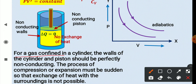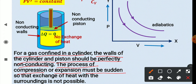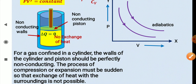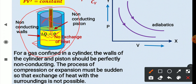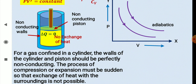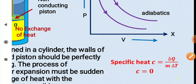For a gas confined in a cylinder undergoing an adiabatic process, the walls and piston must be perfectly non-conducting. The process of compression or expansion must be sudden so that exchange of heat with the surroundings is not possible. Anything kept in a thermos flask is an example of adiabatic change.